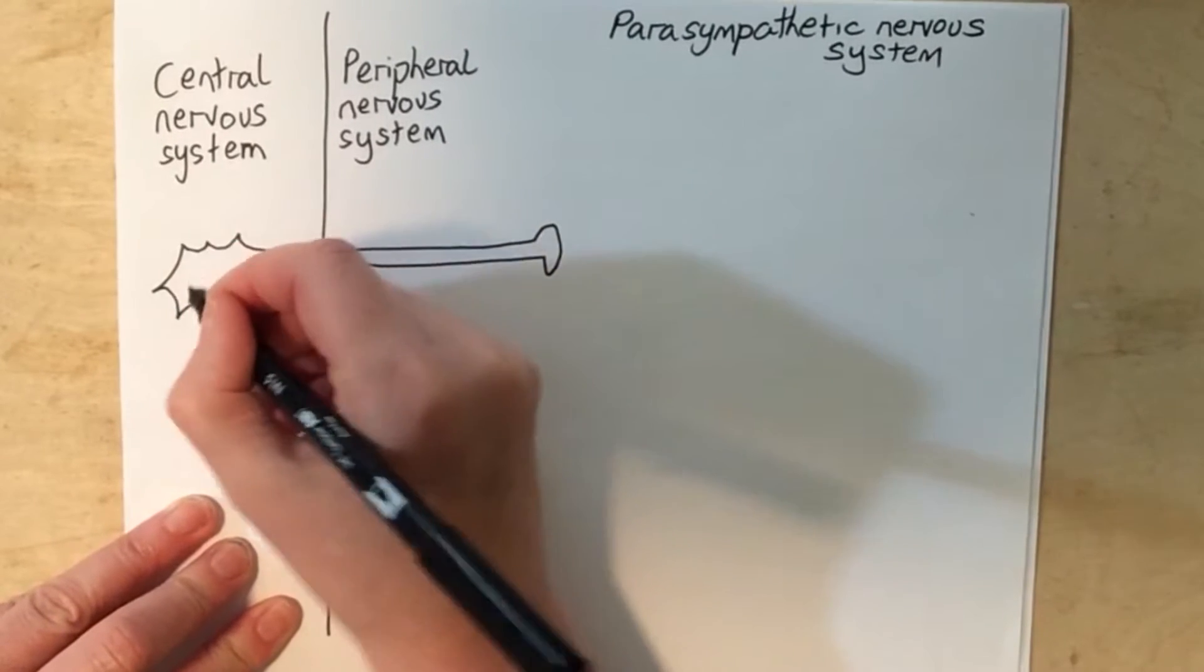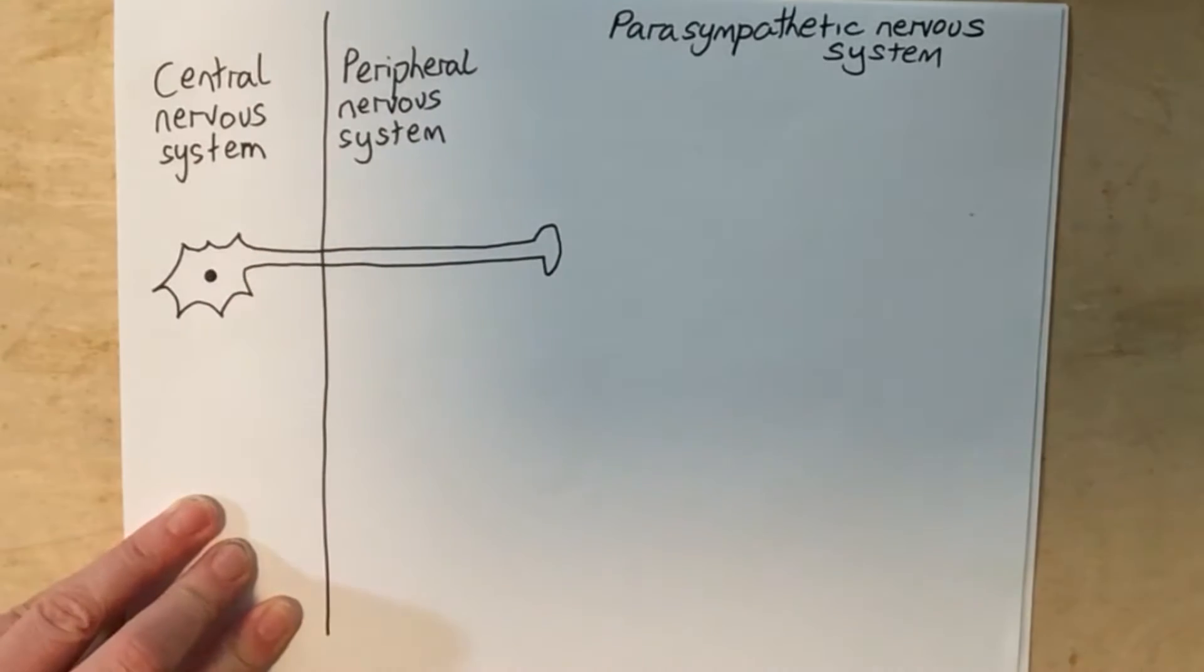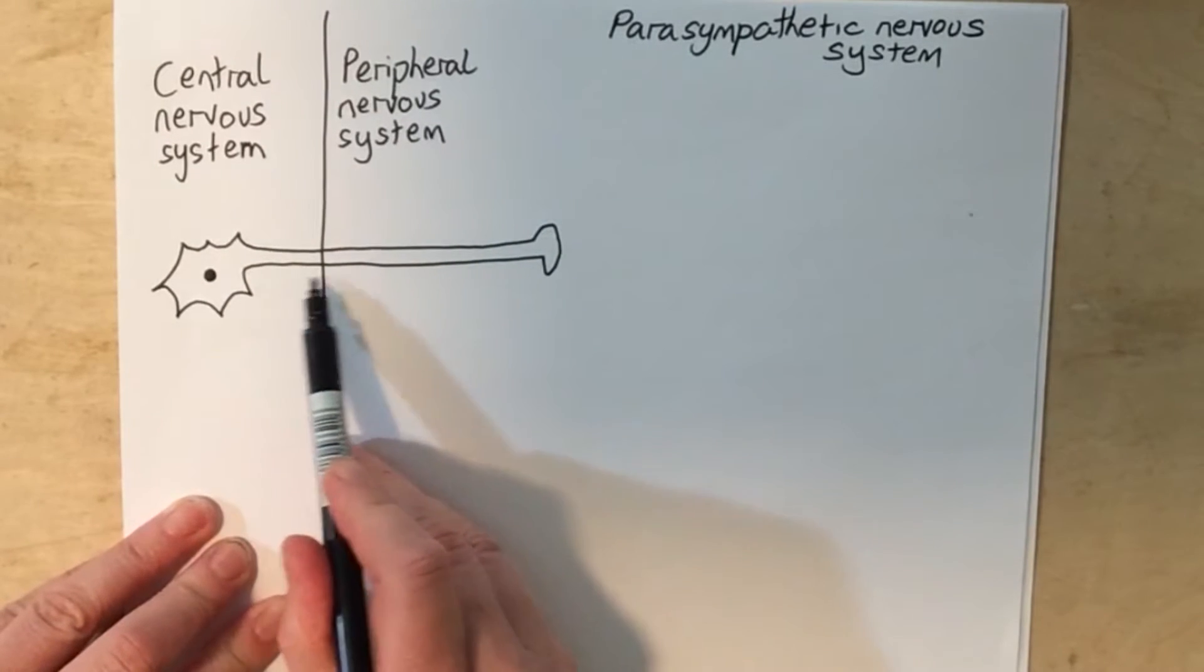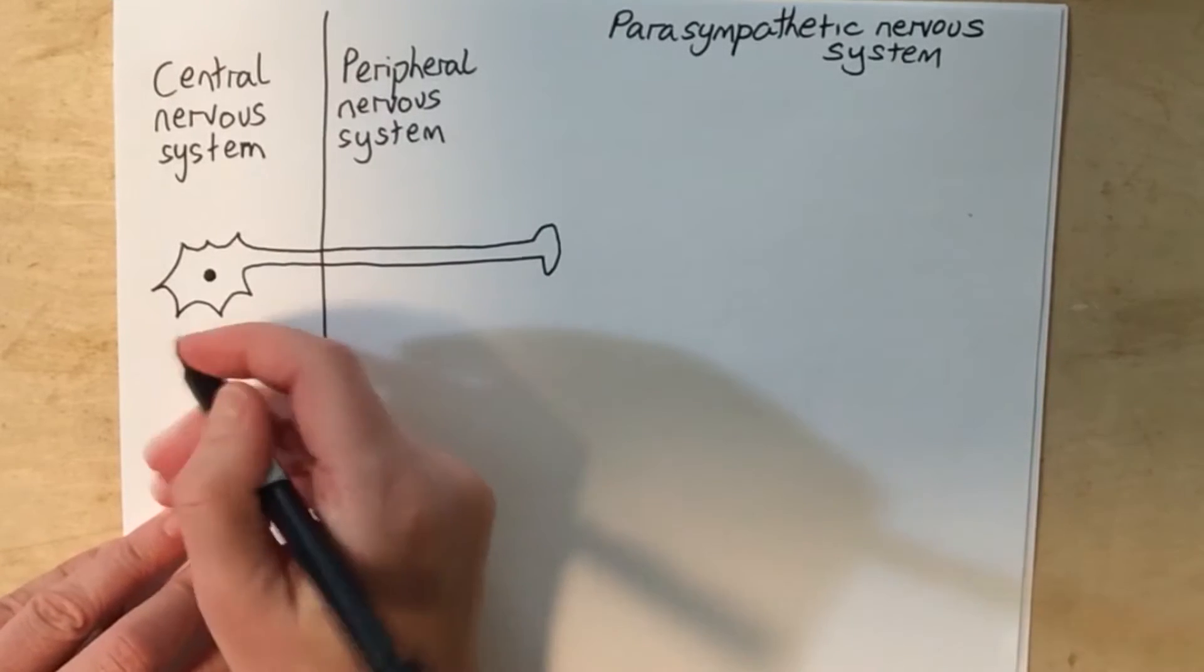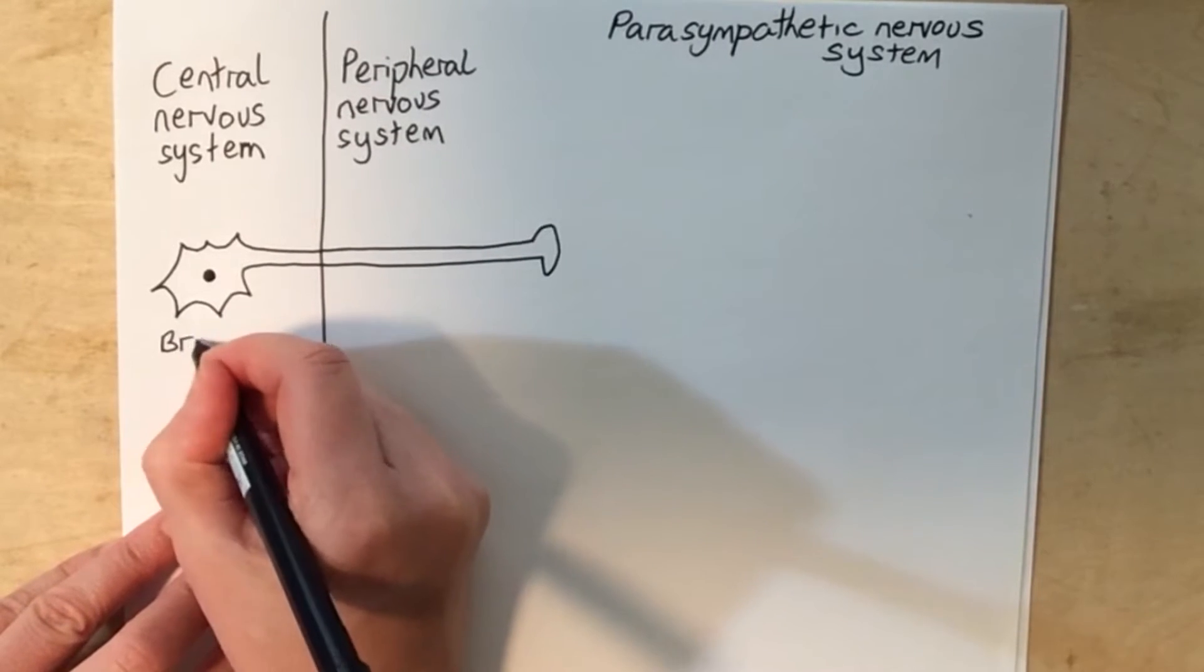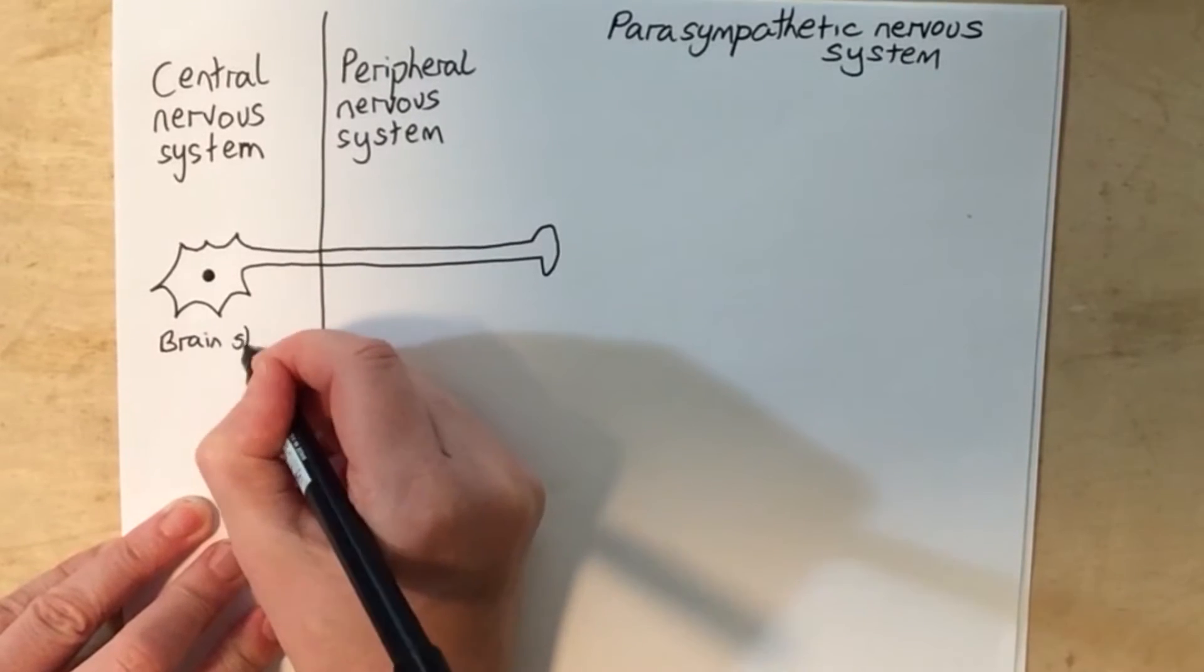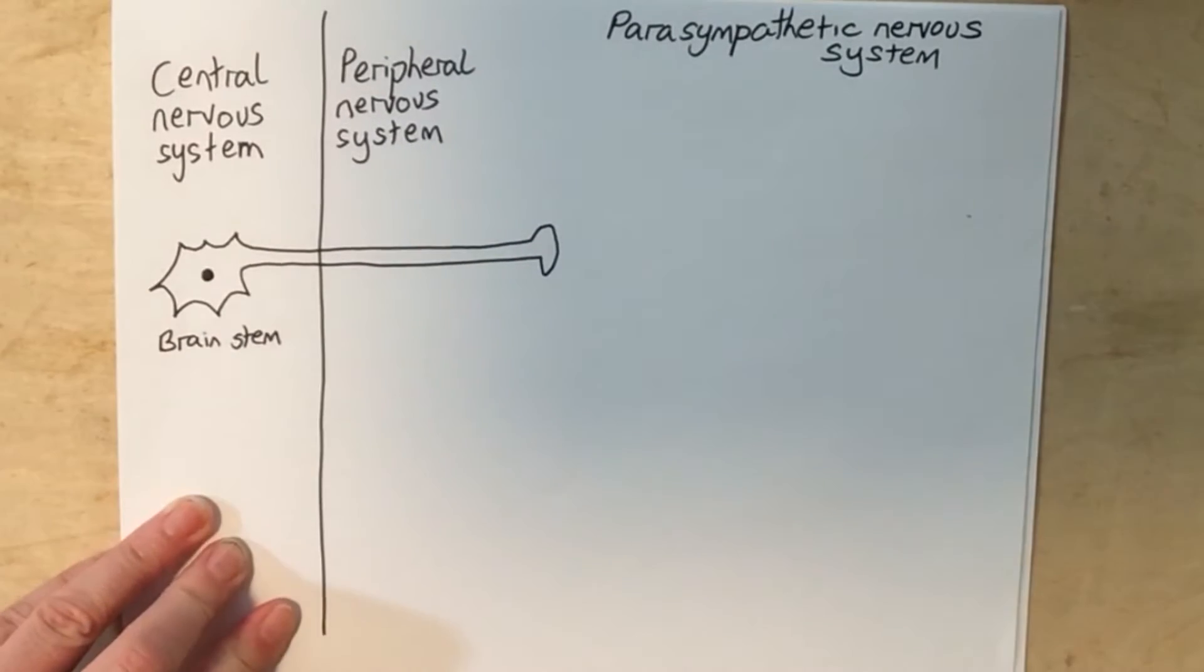The cell body of the preganglionic neuron is located in the CNS, and then the axon extends out into the peripheral nervous system. These cell bodies are specifically located either in the brainstem or in the sacral region of the spinal cord.